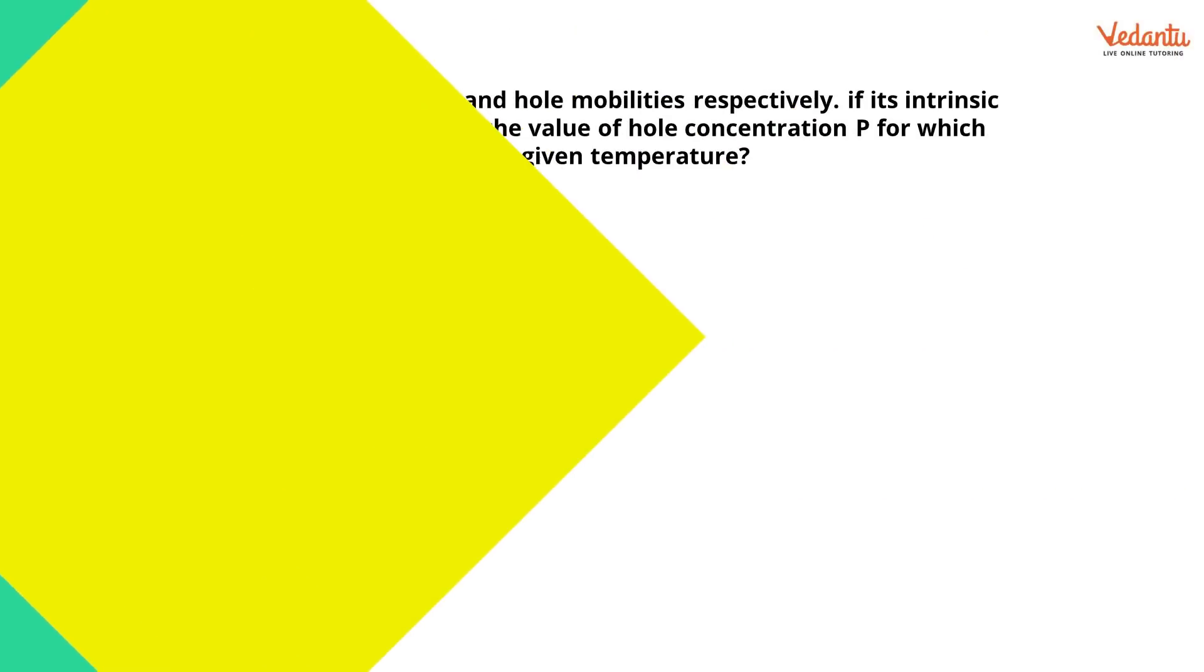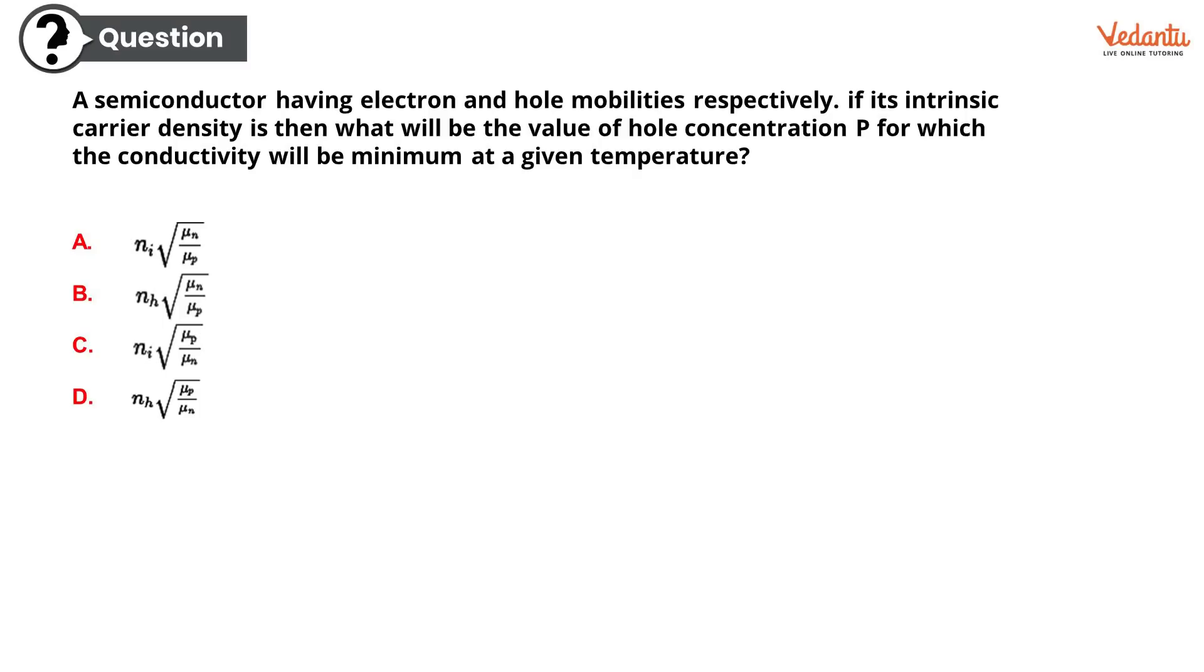A semiconductor having electron and hole mobilities μn and μp respectively. If its intrinsic carrier density is ni, then what will be the value of hole concentration p for which the conductivity will be minimum at a given temperature? The options are: option A ni root of μn upon μp, option B nh root of μn upon μp, option C ni into root of μp upon μn, or option D nh root of μp upon μn. A lot of mu's, interesting, but you can do this very easily. Let's go ahead and the correct option is option A, ni root of μn upon μp.